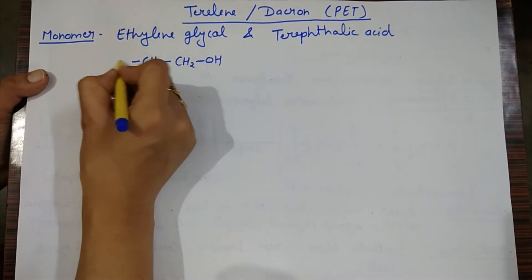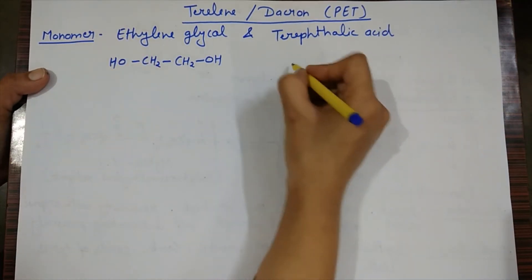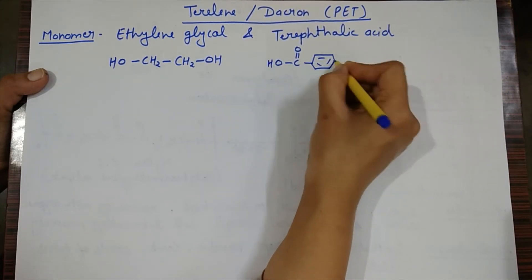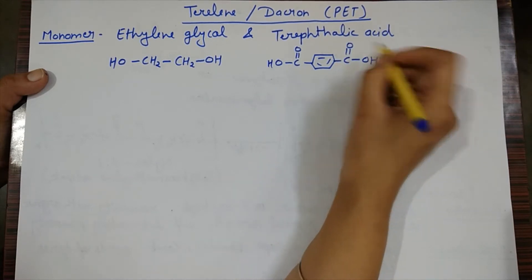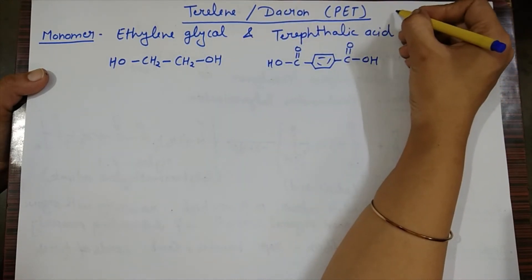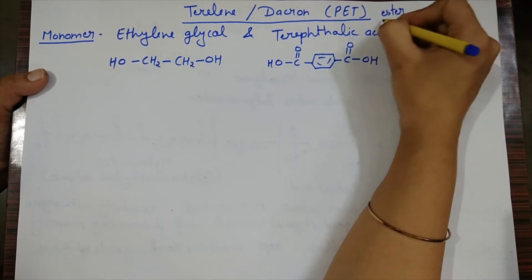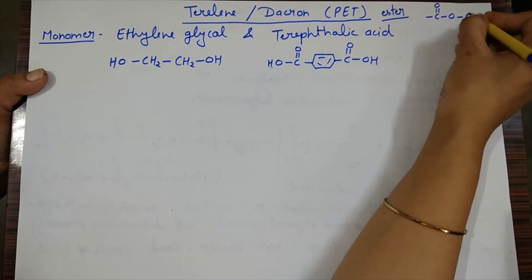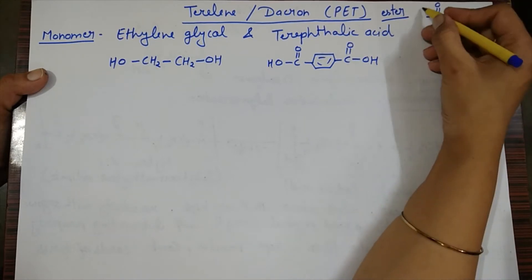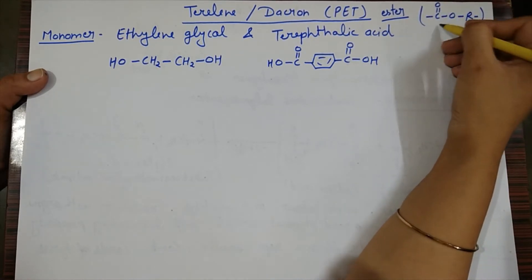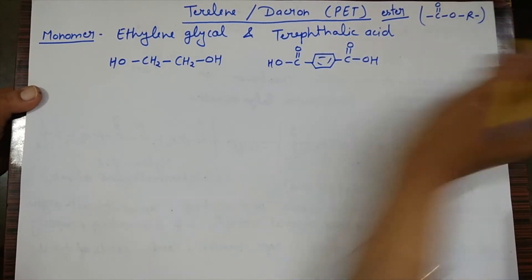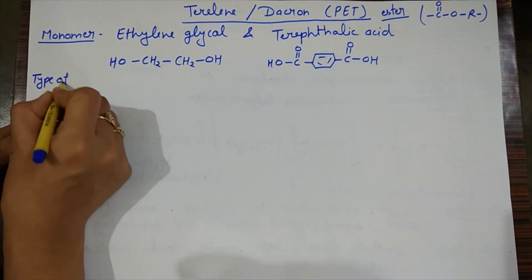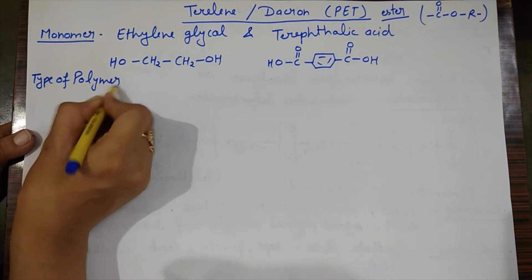It is ethylene glycol, HO-CH2-CH2-OH, and terephthalic acid, HO-C(=O)-benzene-C(=O)-OH. This is polyester category, which has an ester functional group. The ester linkage is written as C-O-O. This is the ester group which is present in our polymer. So the monomer units are ethylene glycol and terephthalic acid. On this basis, if we talk about type of polymer, what type of polymer should this be?